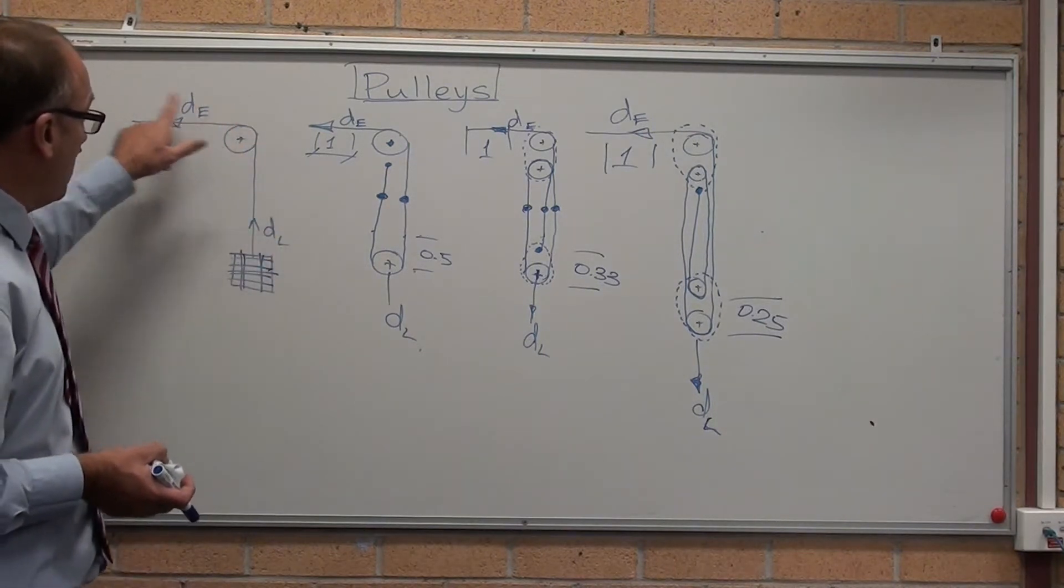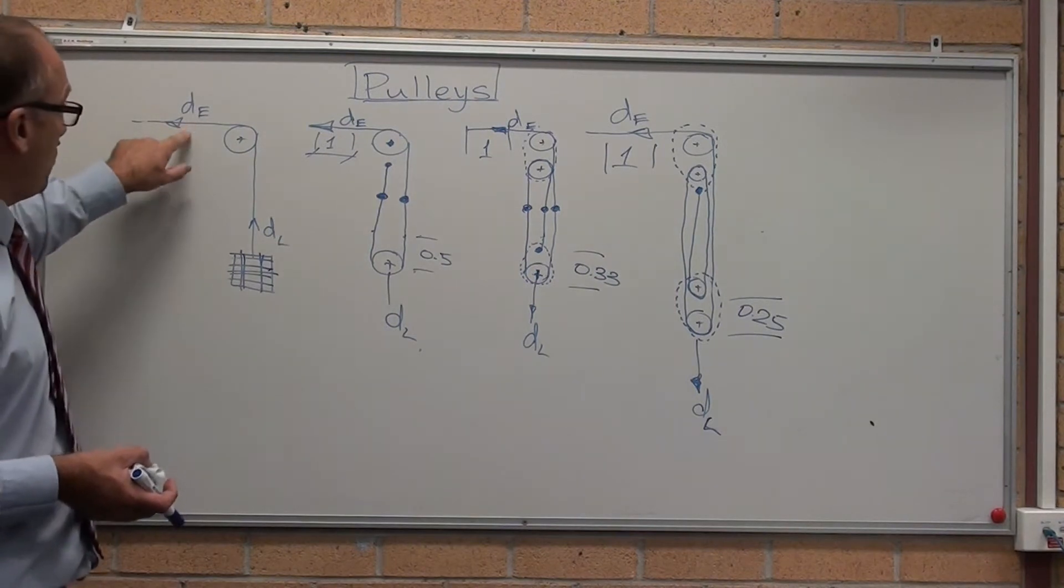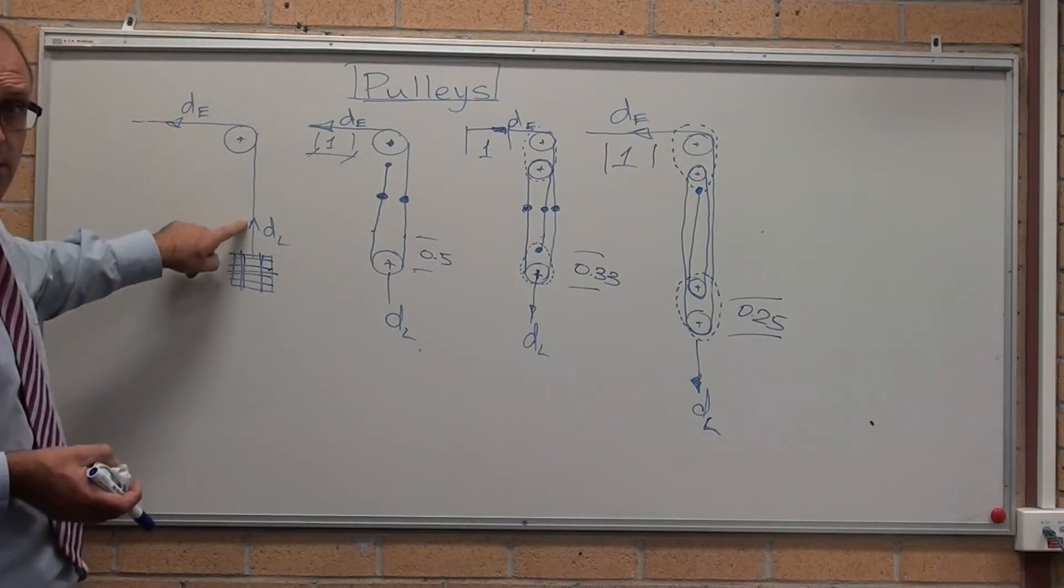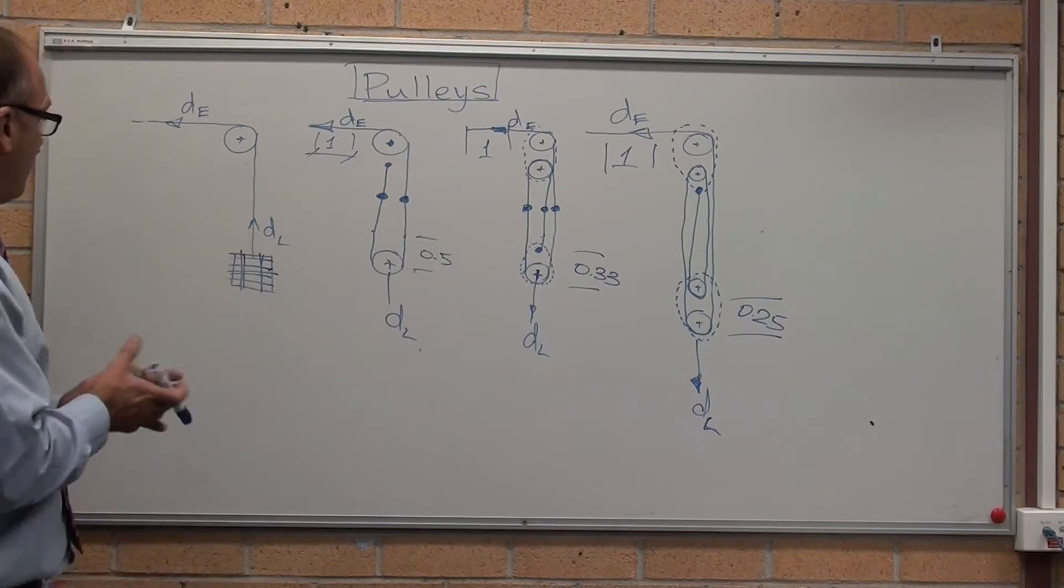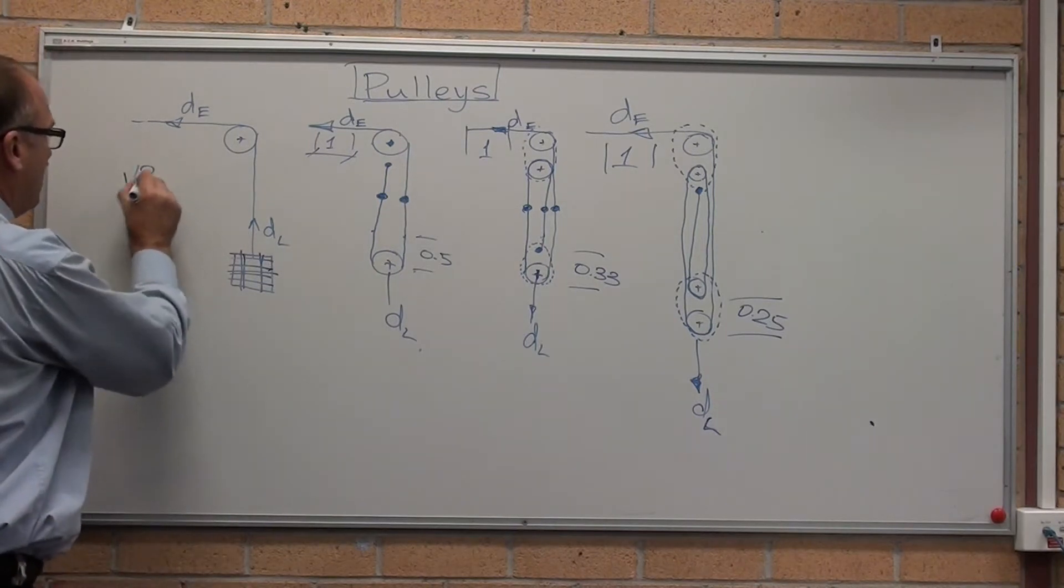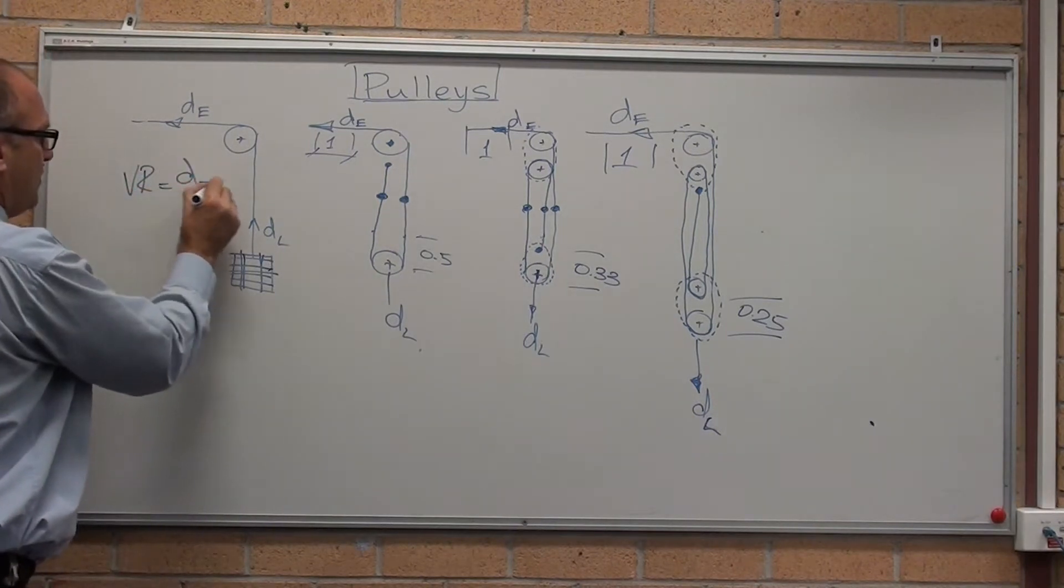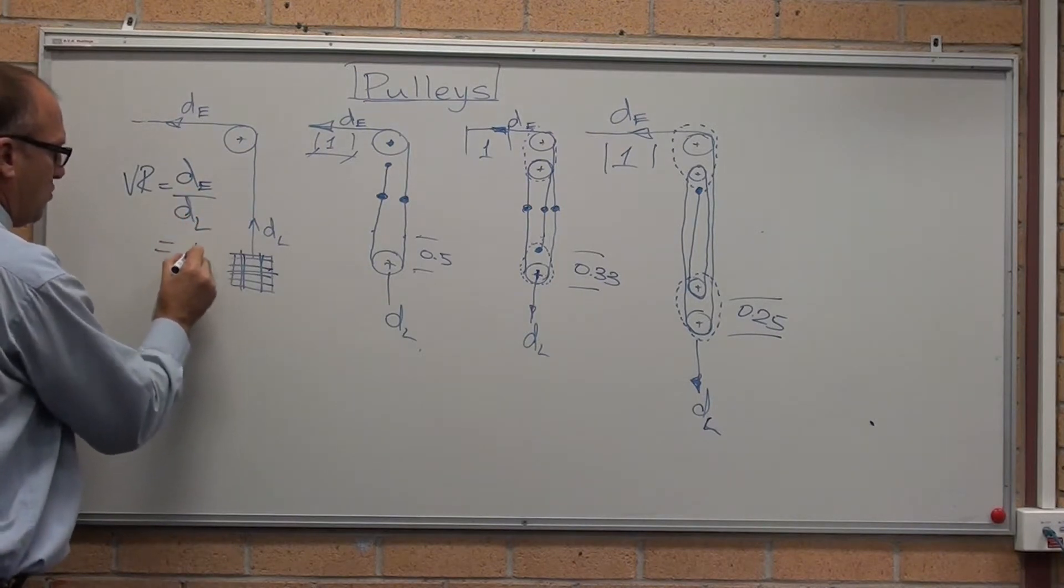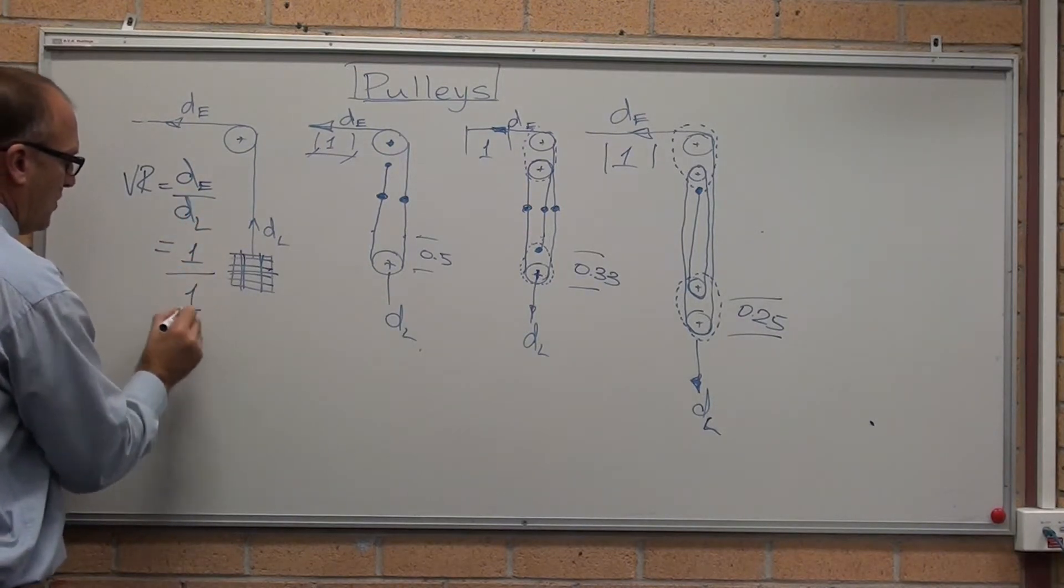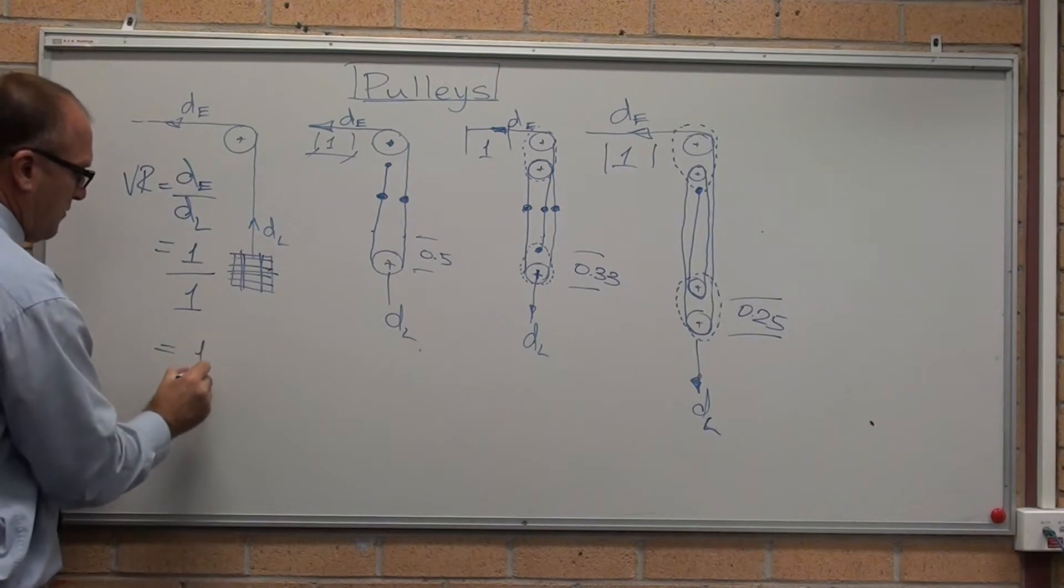Distance moved by load, distance moved by effort. For every one meter that moves, that's got to move one meter as well. The velocity ratio here equals distance effort on distance moved by the load equals one on one equals, oddly enough, one.